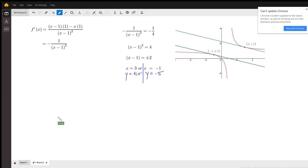So, if we go to the next board, here I am finding the derivative by using the quotient rule. Denominator times the derivative of the numerator, minus the numerator times the derivative of the denominator, all over the denominator squared.